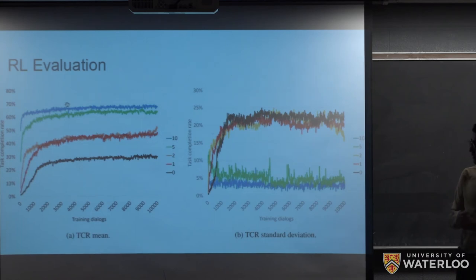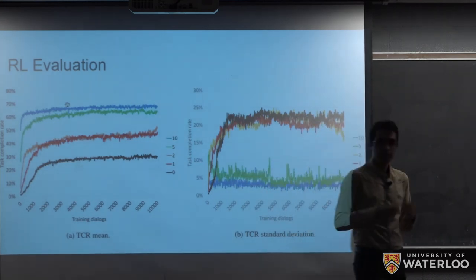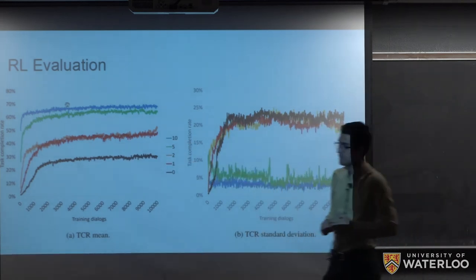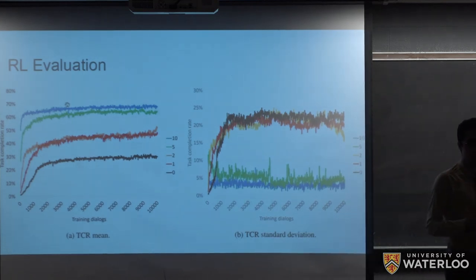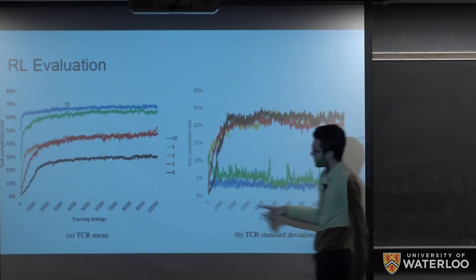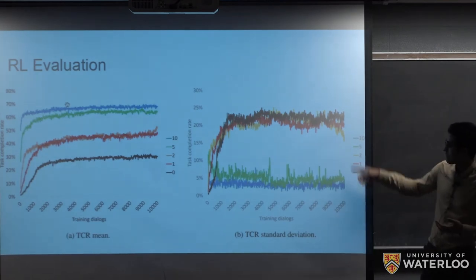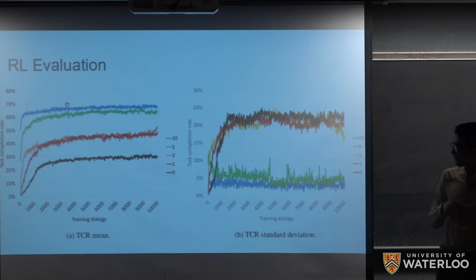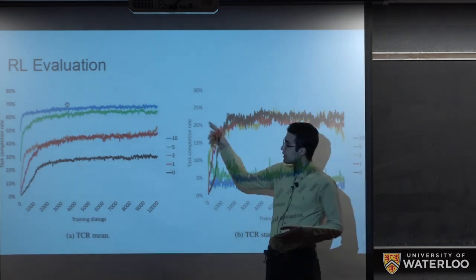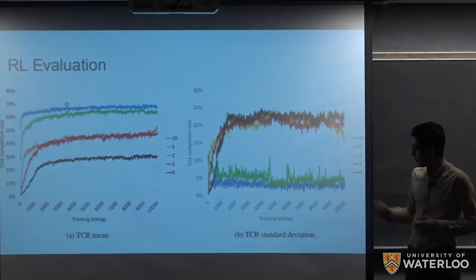Here we can see the evaluation of reinforcement learning. As you can see, we have different curves here, which correspond to the number of dialogues that we use in the supervised learning phase before starting the reinforcement learning. And this number goes from 0 to 10. If it is 0, it means that we don't do any supervised learning beforehand, and we just start reinforcement learning on the initial LSTM model. In that case, you can see in the black curve that the mean of task completion rate is not high enough. And on the right side, you can see it has also a very high standard deviation. But if we use 10 dialogues to train our model in the supervised learning phase, then we would get the blue curve in which we have a very high mean of task completion rate and a pretty low standard deviation.